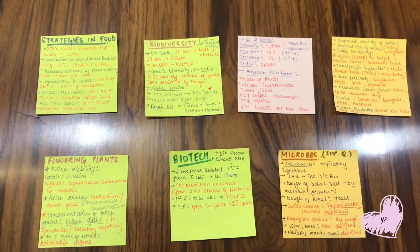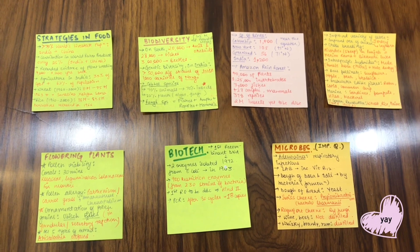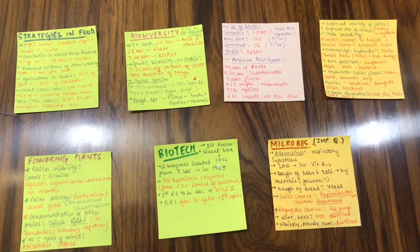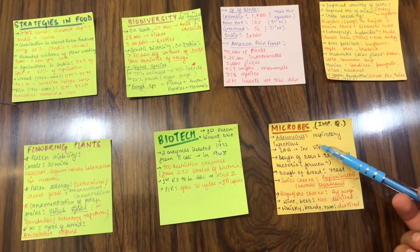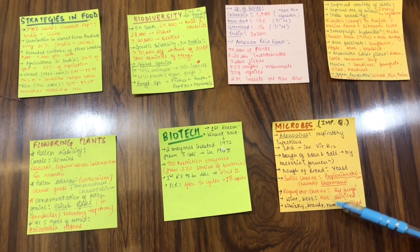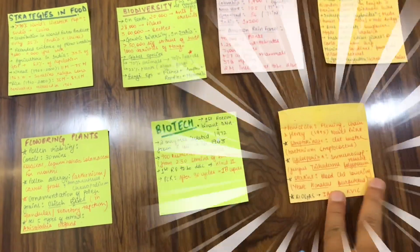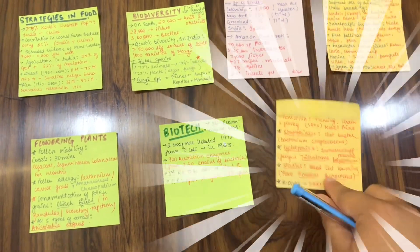So, these are the flashcards that I prepared for some of the chapters. And it is one of the most convenient ways that I find to remember things like small things and examples. For microbes, for example, this is the chapter which has a lot of examples. So, I wrote down all the examples.